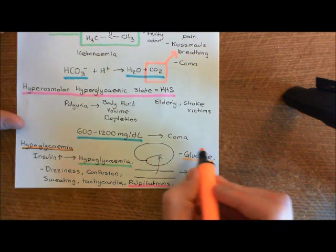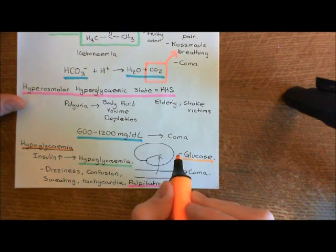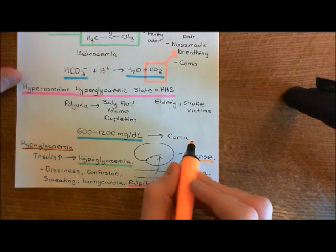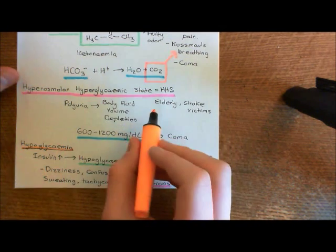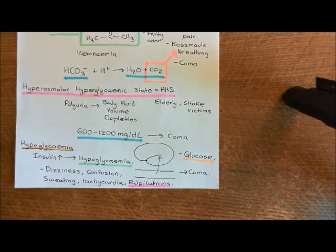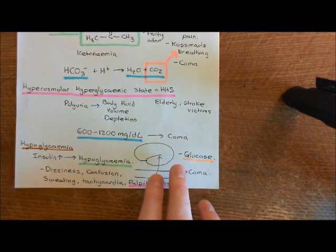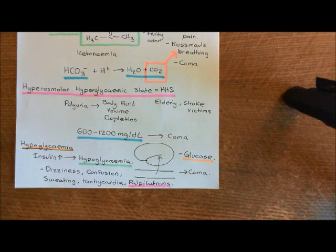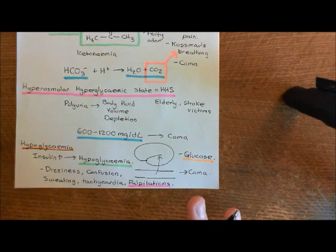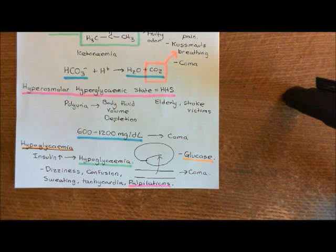If you were to give the wrong treatment in these different cases, you would end up killing the patient. If you gave glucose in hyperosmolar hyperglycemic state, you'd make the hyperglycemia worse and probably kill the patient. If you gave insulin — the treatment for diabetic ketoacidosis — to someone in hypoglycemia, again you'd make the situation worse and probably kill them. This is where knowing your physiology really does save lives. You need to know these three different complications and how they are treated in very different ways.